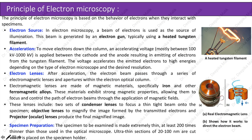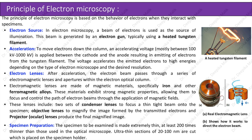Principle of electron microscopy. The principle of electron microscopy is based on the behavior of electrons when they interact with specimens. Electron source: in electron microscopy, a beam of electrons is used as the source of illumination. This beam is generated by an electron gun, typically using a heated tungsten filament.